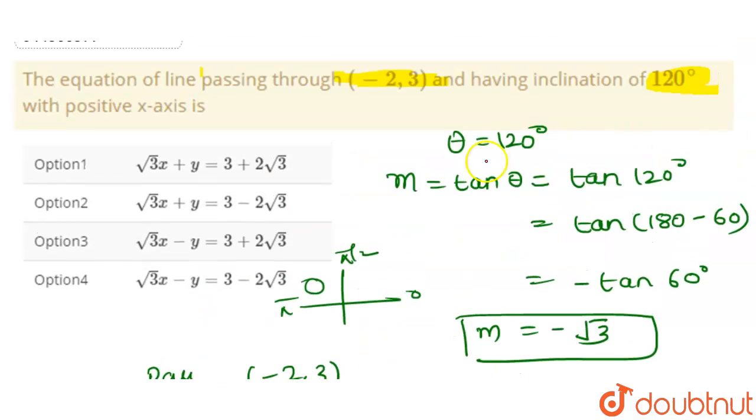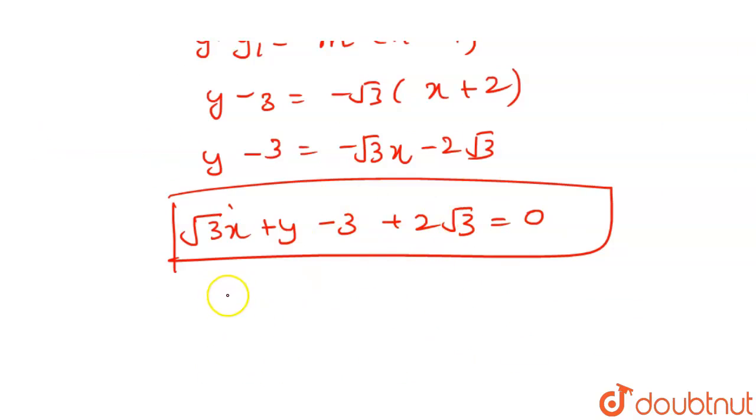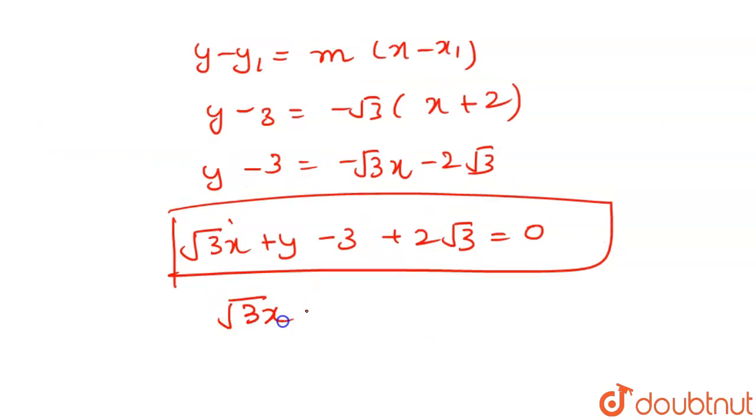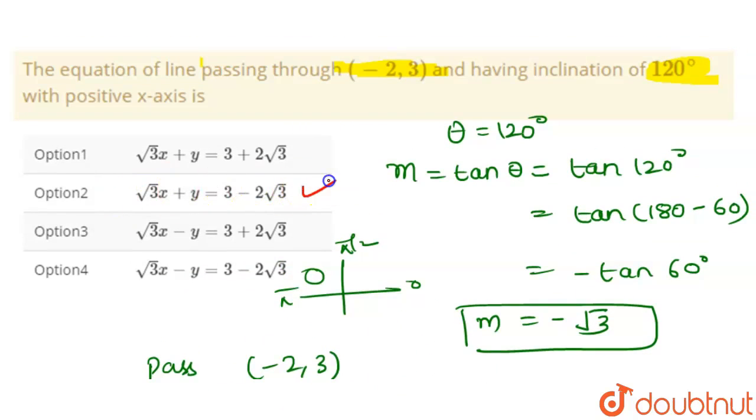So this is our equation. Okay, let's send the last two terms on another side. We will get root 3x plus y equals 3 minus 2 root 3. So our option second is correct. Thank you.